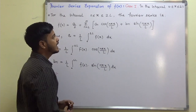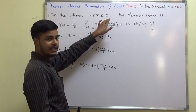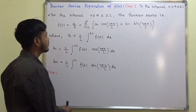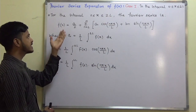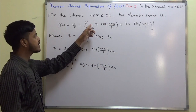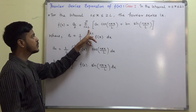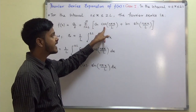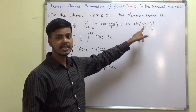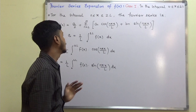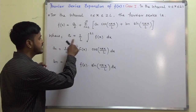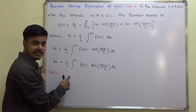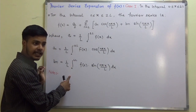If the interval is 0 to 2L, then the Fourier series for the function f(x) is a₀/2 plus summation n equal to 1 to infinity of aₙ cos(nπx/L) plus bₙ sin(nπx/L), where a₀, aₙ, and bₙ are the standard Fourier coefficients.